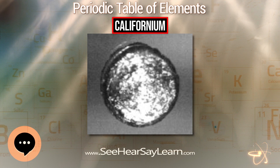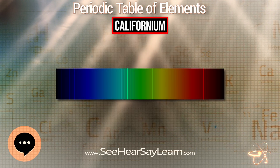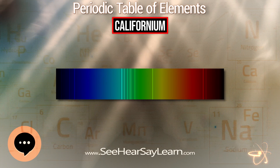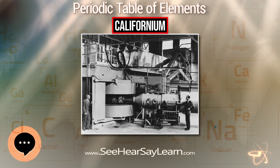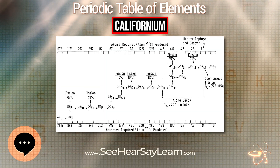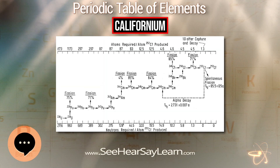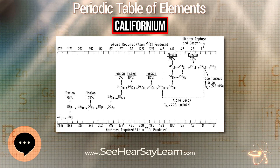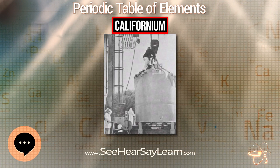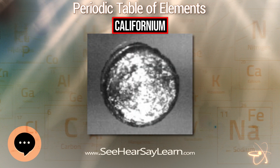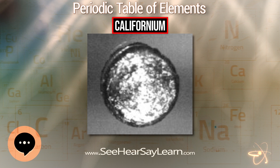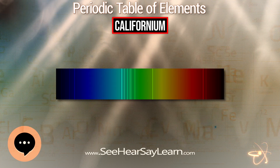Californium is a radioactive chemical element with symbol Cf and atomic number 98. The element was first synthesized in 1950 at the Lawrence Berkeley National Laboratory by bombarding curium with alpha particles. It is an actinide element, the sixth transuranium element to be synthesized, and has the second highest atomic mass of all elements produced in amounts large enough to see with the unaided eye. The element was named after the University and state of California.